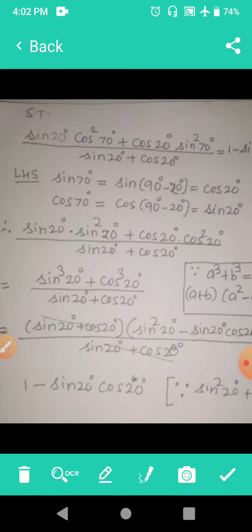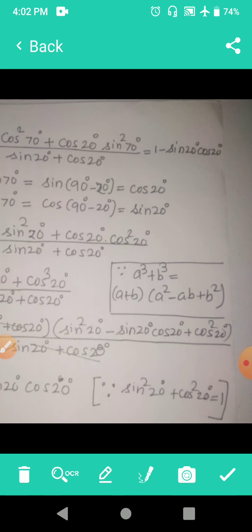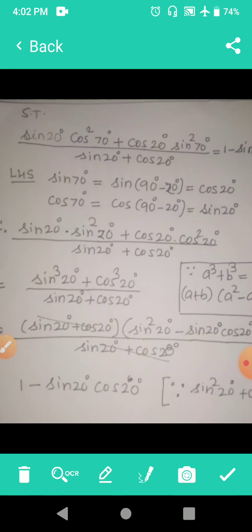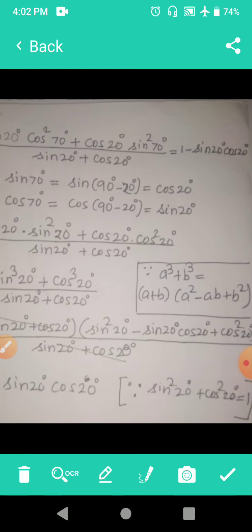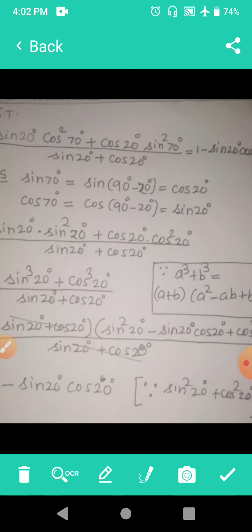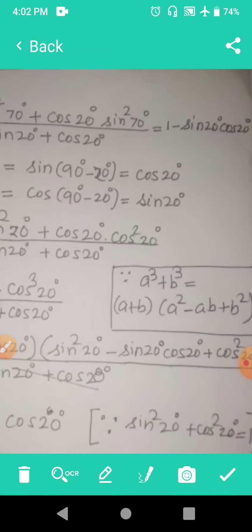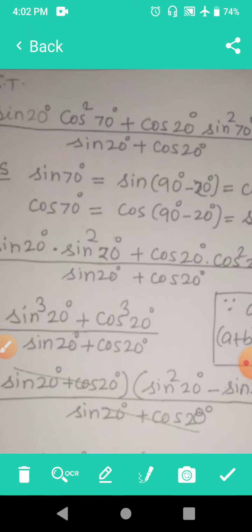Now sin20 + cos20 will cancel. What is left is sin²20 - sin20·cos20 + cos²20. And because sin²20 + cos²20 equal to 1, you will be getting 1 - sin20 × cos20. So this is how example is solved. I am converting 70 degrees into 20 degrees because the right hand side has only angles 20 degrees.